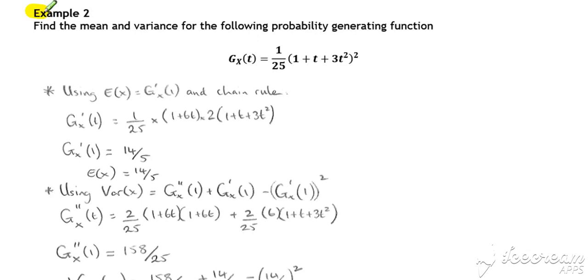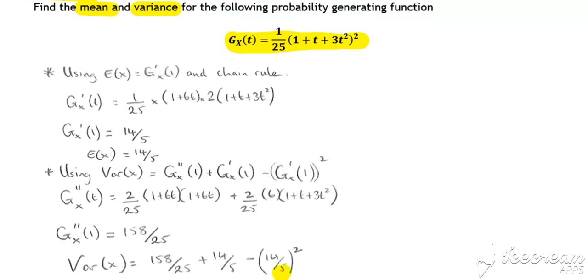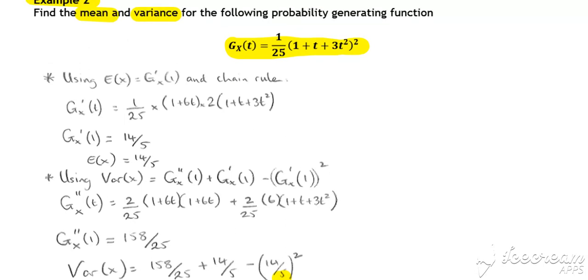Similar idea then in example two. We've got to work out the mean and the variance again. Here's our probability generating function. So this time just a little bit more complicated in terms of the differentiation required.